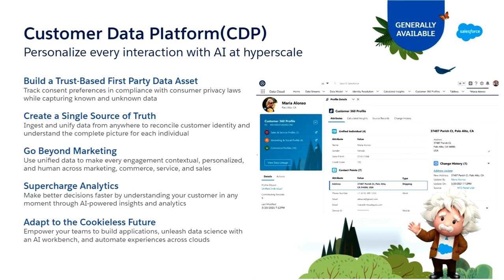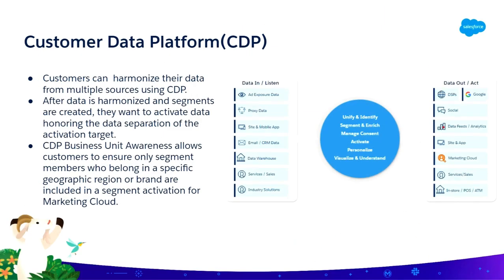This allows customers to adapt to the cookieless future — when you're no longer able to track customers anonymously, you want all their information in one place. When you think about the customer data platform, data is coming into the system from many different source systems, each with their own data segmentation, data segregation, and data access definitions. Once in CDP, it's currently a single harmonized environment where all source system data gets matched into unified profiles.